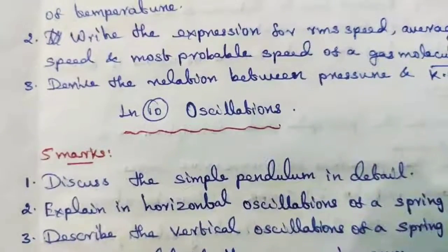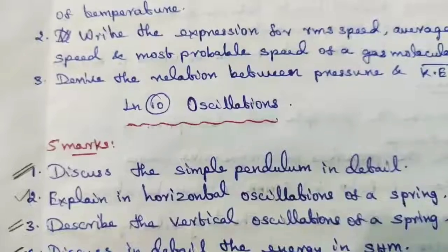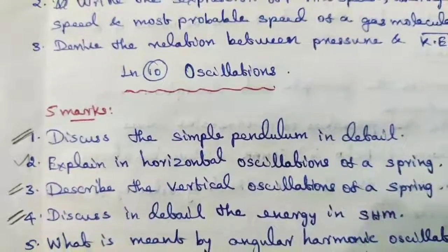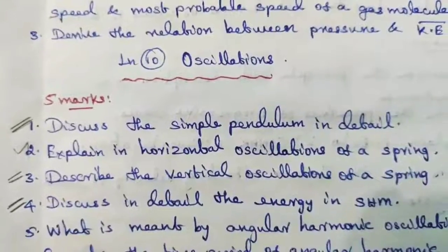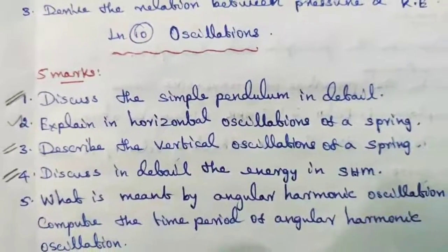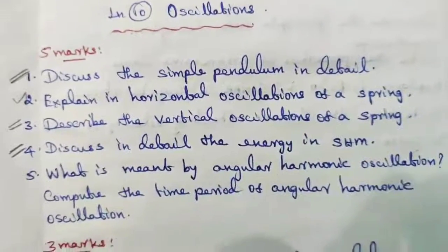Explain horizontal oscillations of a spring. Describe the vertical oscillations of a spring. Discuss in detail the energy in SHM. What is meant by angular harmonic oscillation? Compute the time period of angular harmonic oscillation.